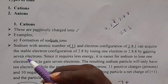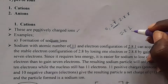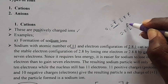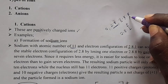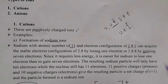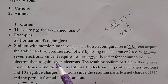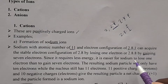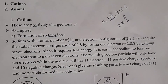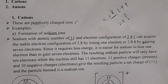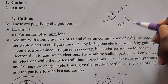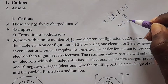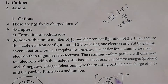Alternatively, sodium could gain seven electrons to get an electron configuration of 2,8,8, which is also stable. However, since it requires less energy, it is easier for the sodium atom to lose one electron than to gain seven electrons. Losing one electron requires less energy than gaining seven electrons.